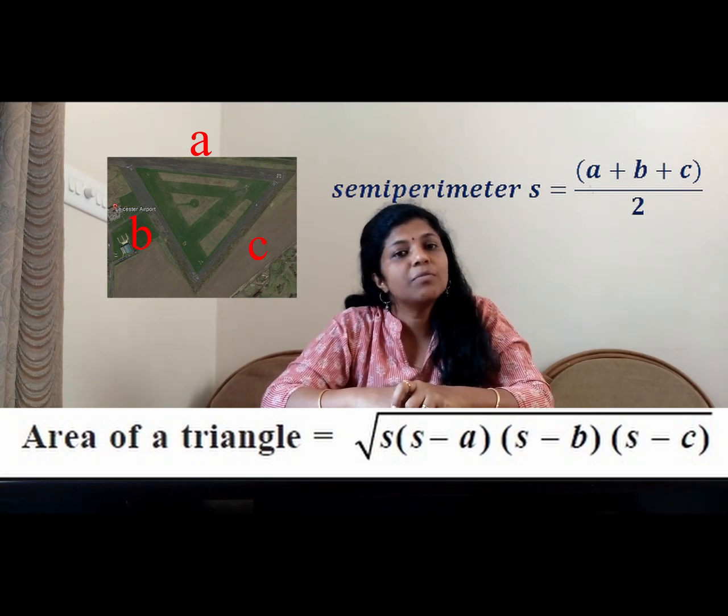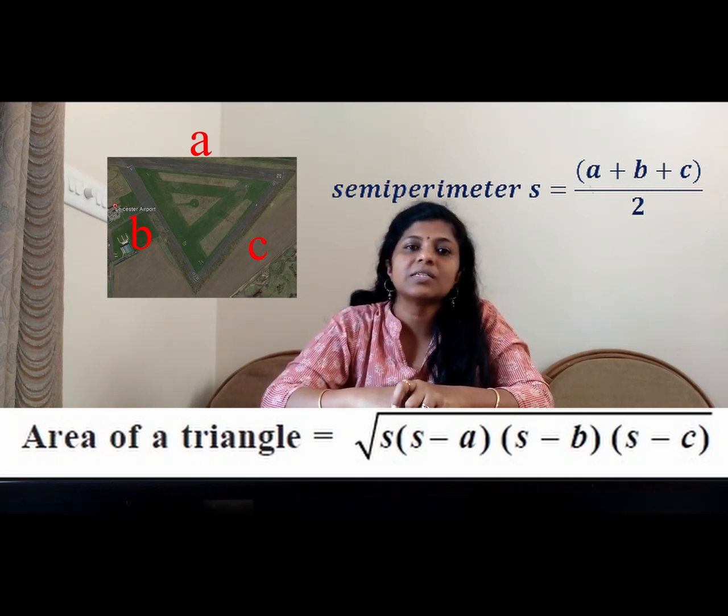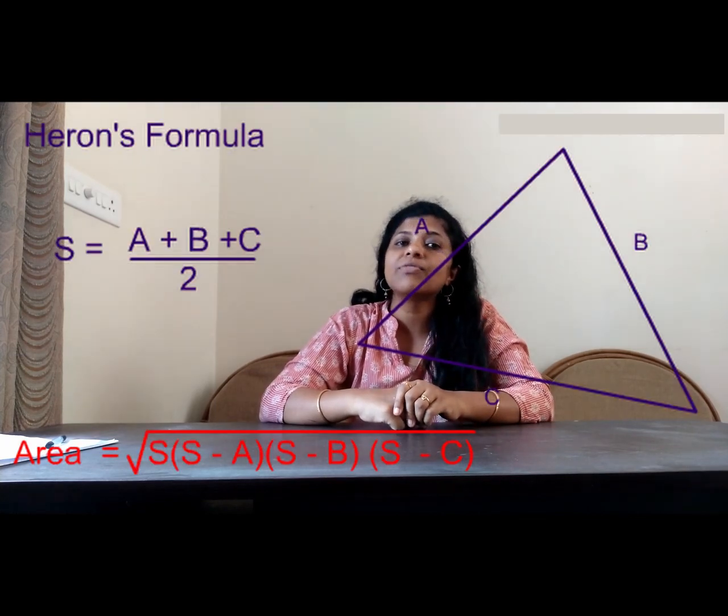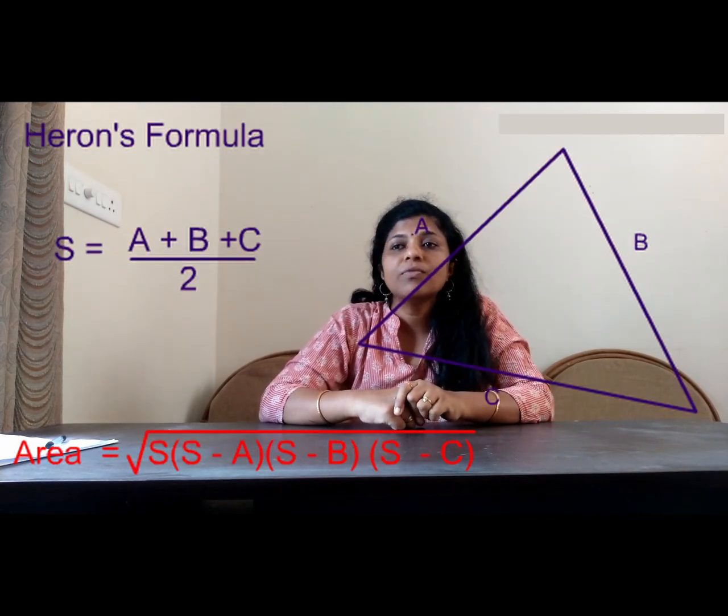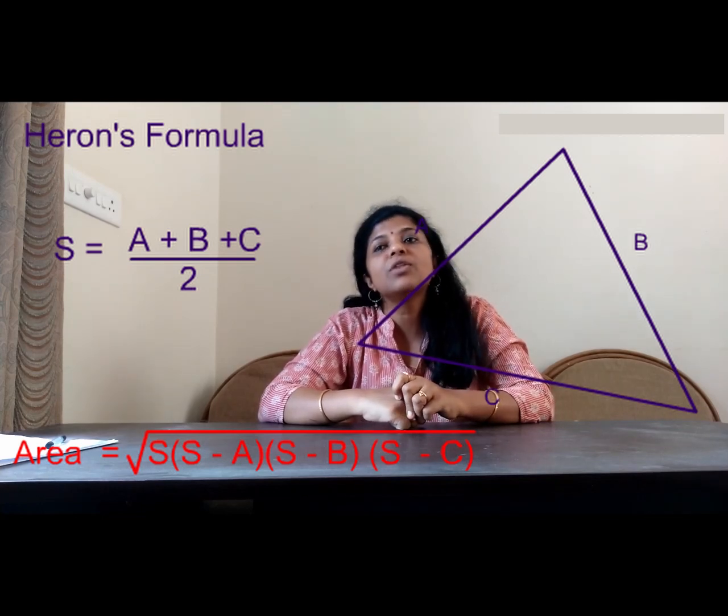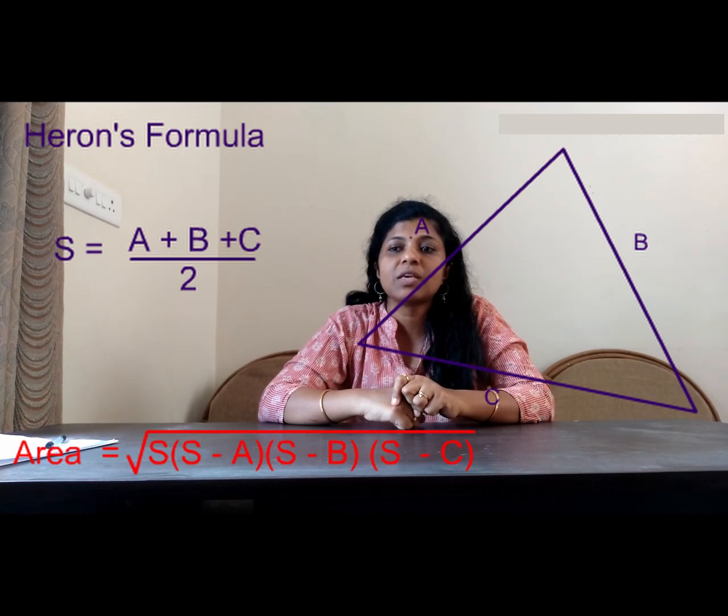So, according to the side, there are three types of triangle. Each triangle has a different formula to find the area. The scalene triangle, that is, all the sides are different. Therefore, we can use the Heron's formula that is square root of S into S minus A into S minus B into S minus C.